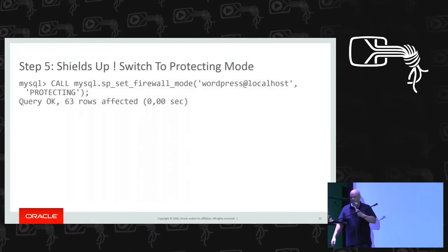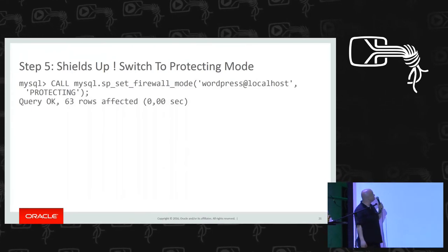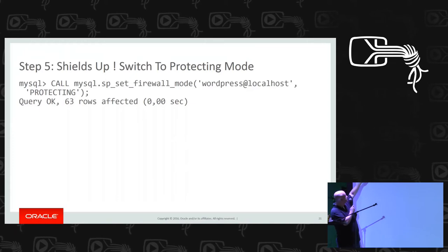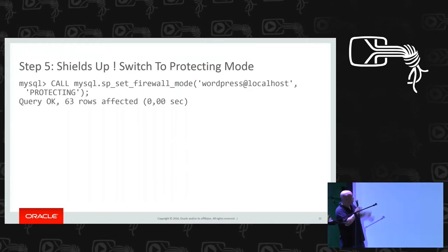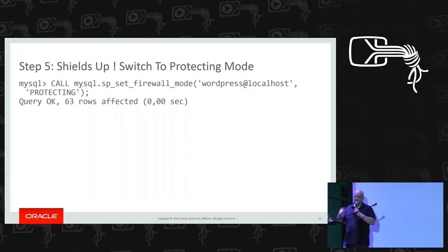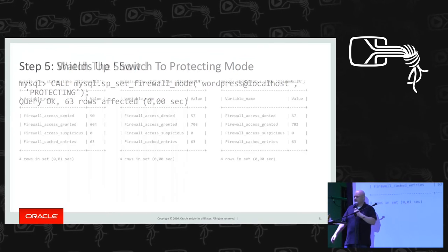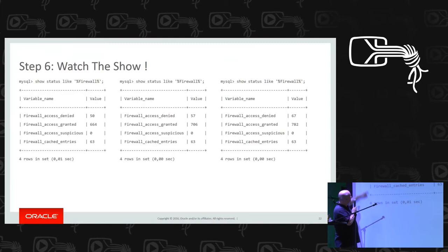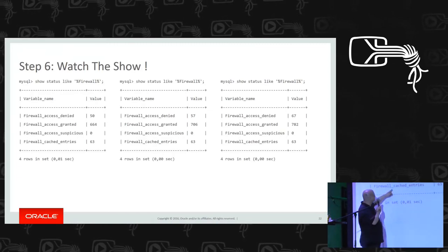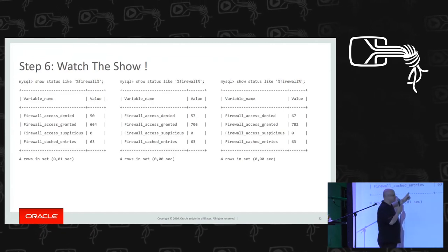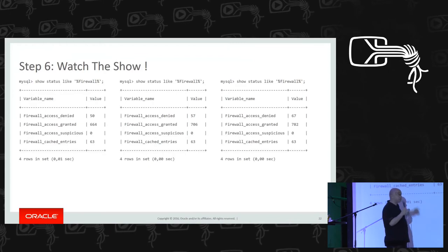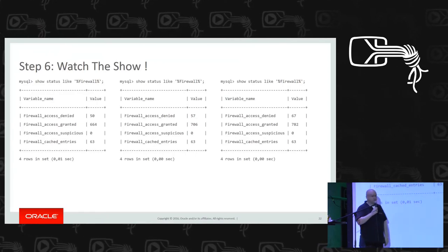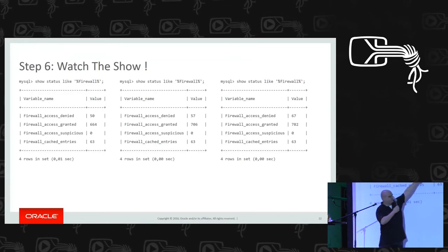Once you are done, you move to the interesting part — shields up mode. You tell the server that you want the WordPress@localhost user protected, not recording anymore, which basically activates the firewall. After enabling this, I tried to publish a post — which I hadn't recorded — and the firewall prevented it, resulting in 50 queries denied.